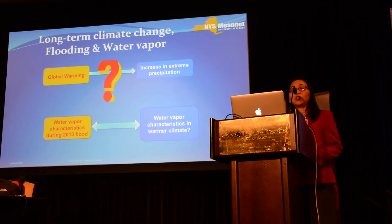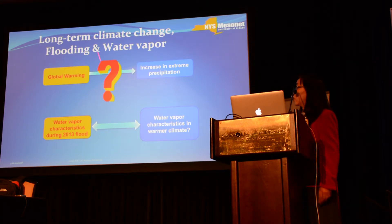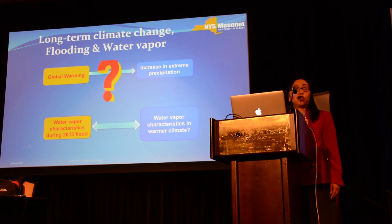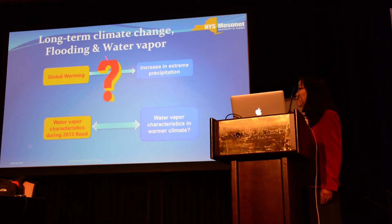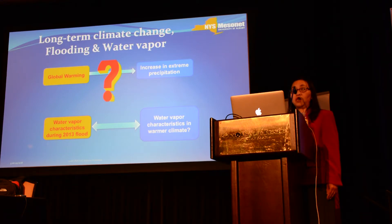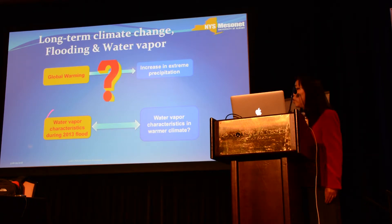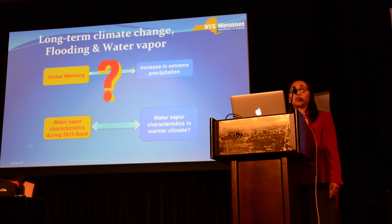Let me move on to the next topic connecting long-term climate change, flooding, and water vapor. Quite a few studies have shown that as the climate gets warmer, you get an increase in extreme precipitation intensity. The big question is: what causes this? Water vapor would be one of the suspects. Based on the 2013 Colorado flood, we saw distinctive water vapor characteristics. So let's look at water vapor characteristics during different climate periods and for the future climate — how can we see anything about flooding in a warmer climate?